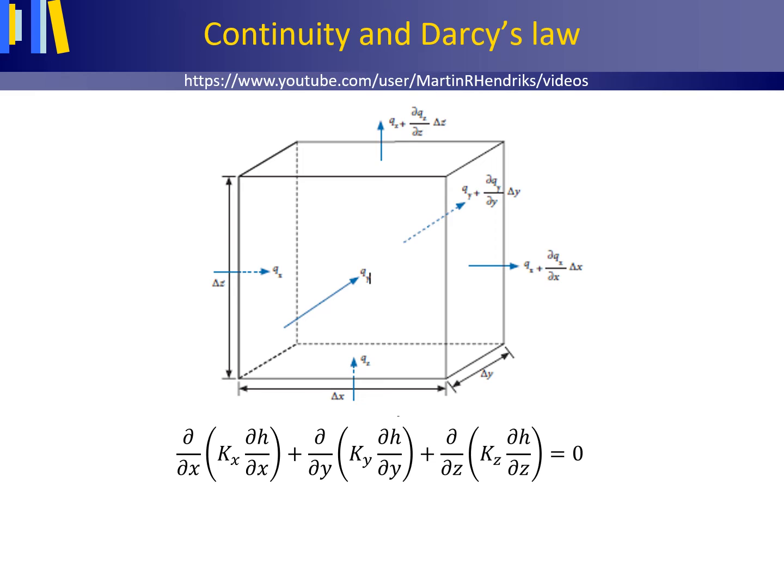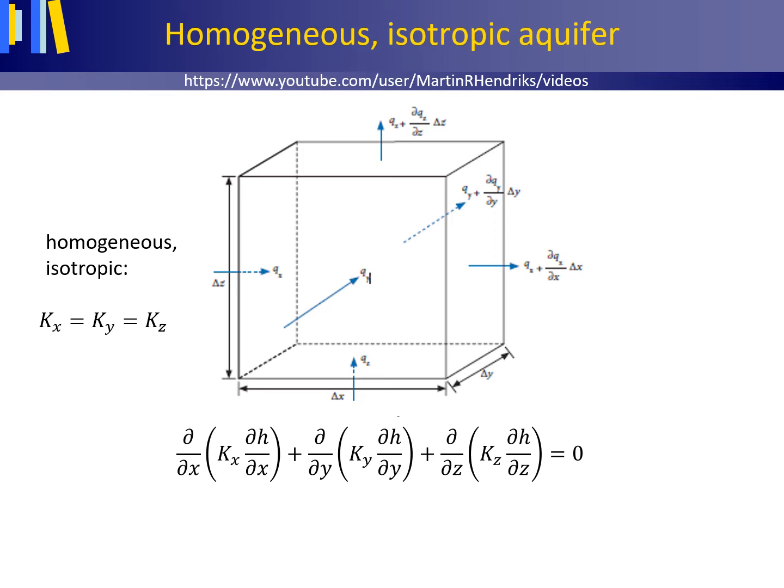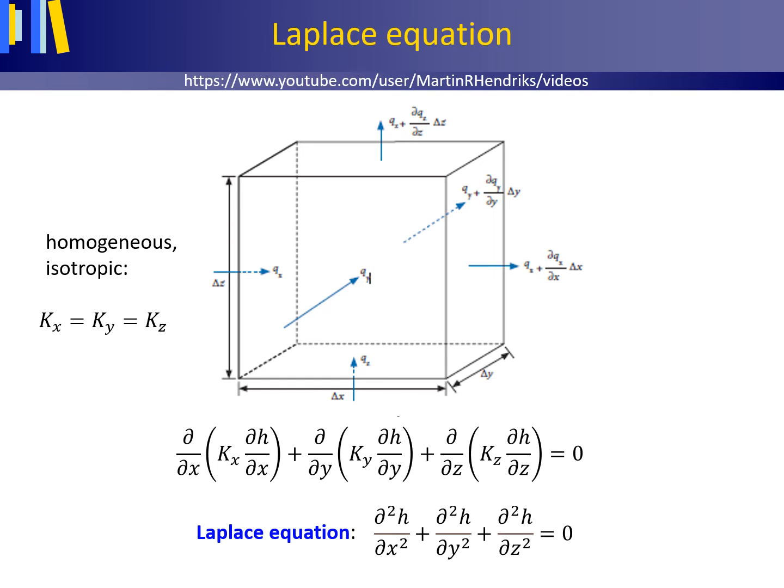Here we have the last equation again. For a homogeneous isotropic medium, the saturated hydraulic conductivities Kx, Ky and Kz are constant and equal to each other. Dividing both sides of the equation by the saturated hydraulic conductivity delivers the following equation for steady-state flow through a homogeneous isotropic medium, the so-called Laplace equation as shown here. The equation is named after Pierre-Simon Marquis de Laplace, a French scholar and polymath.